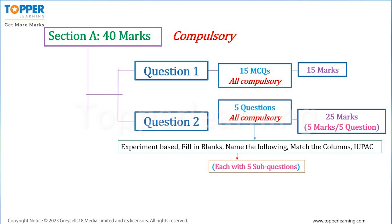Now understand the types of questions which may come under Question 2 of Section A. These 5 sub-questions, of course all are compulsory, may be mostly objective types like fill in the blanks, match the columns, name the following, draw structures from given IUPAC names, or write IUPAC names of given structures. One more important question can be an experiment-based question. Each of the 5 sub-questions will again have further 5 sub-questions carrying 1 mark each.